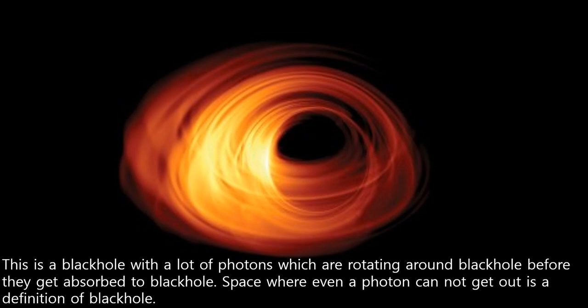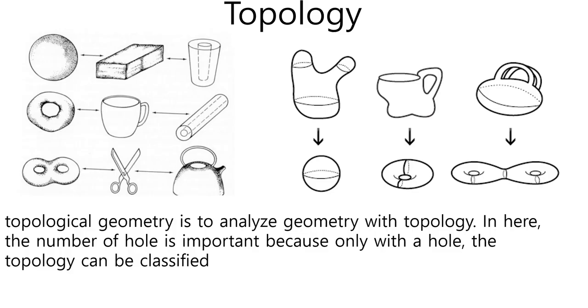This is a black hole with a lot of photons which are rotating around the black hole before they get absorbed into it. Space where even a photon cannot get out is a definition of a black hole. Topological geometry is to analyze geometry with topology. The number of holes is important because only with a hole can topology be classified.